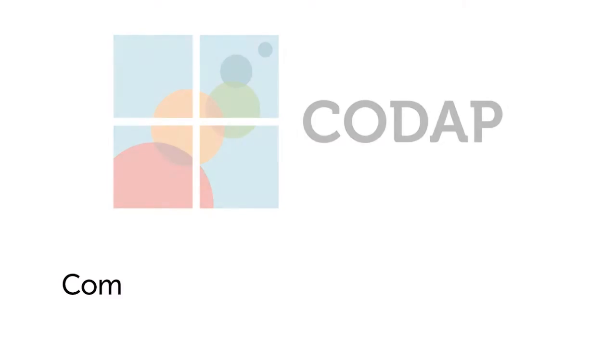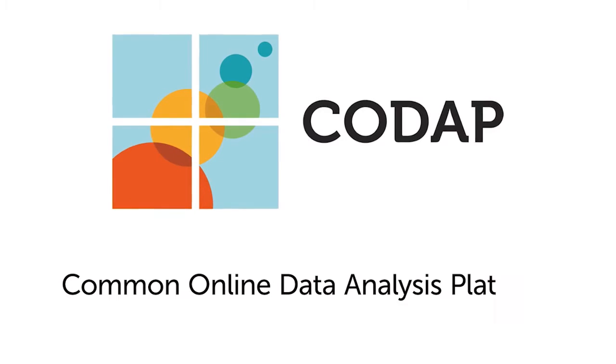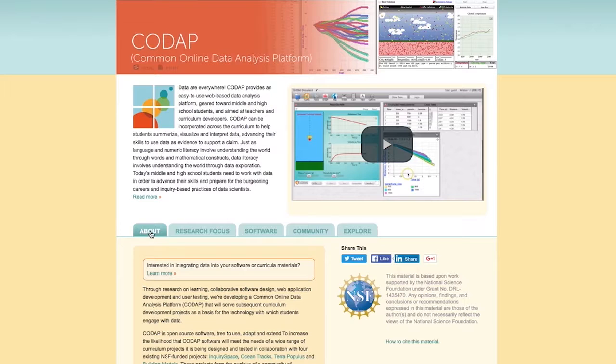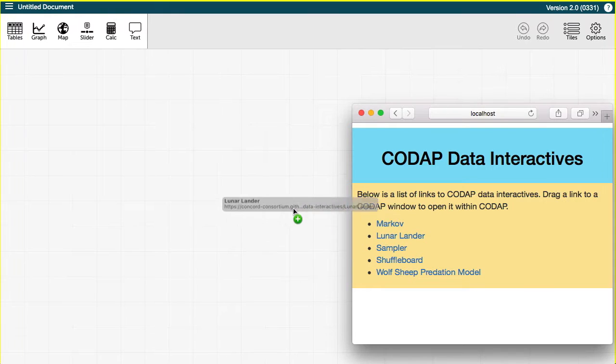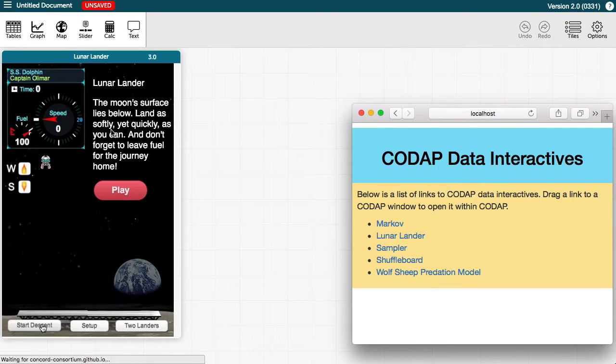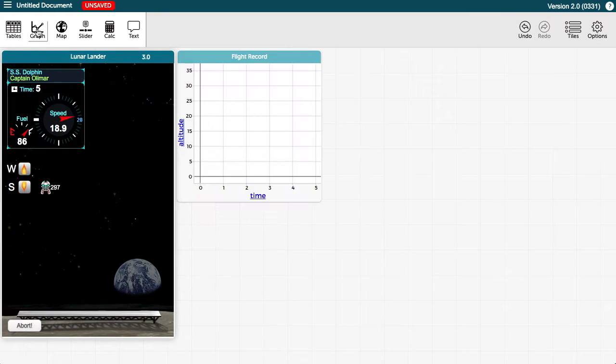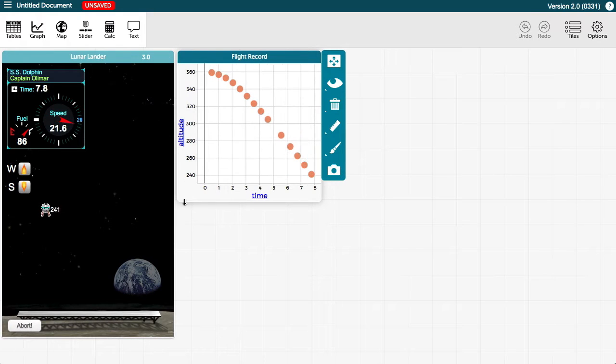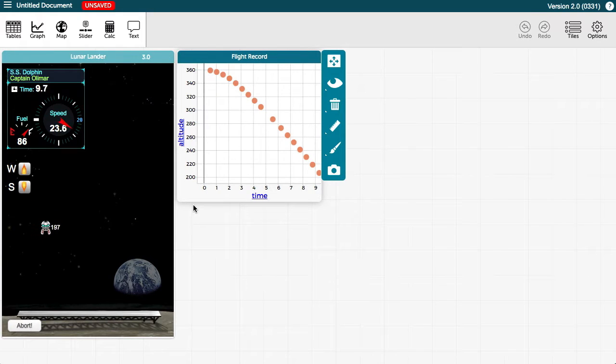We hope that one of the solutions to this problem will be software that we're developing currently called the Common Online Data Analysis Platform, or CODAP for short. CODAP is a tool for students to explore data. The interface and the simple and quick way that visualizations can be generated encourage people to follow their curiosity. It makes analyzing data more accessible to students and more engaging for everyone.